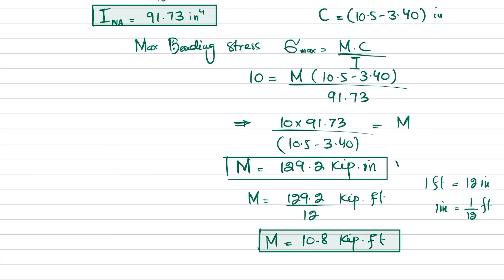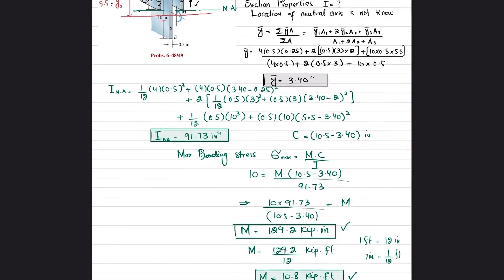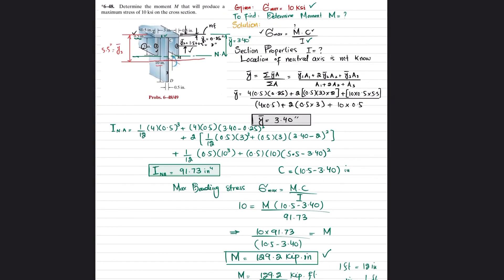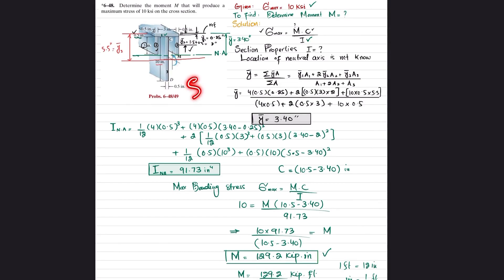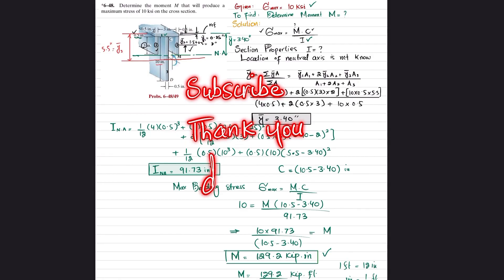So the answer is M = 129.2 kip·in or equivalently 10.8 kip·ft. I hope you enjoyed this video. The next problem is 6-49, where we will calculate stresses — the rest of the concepts will be the same. If you are new to my channel, please subscribe and press the bell icon for notifications. If you have any questions, ask in the comment section. Thank you for watching.